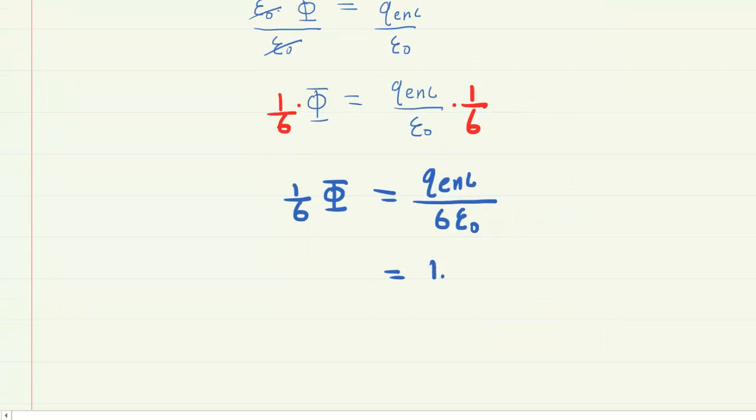And that happens to have a value of 1.6 times 10 to the negative 19th coulombs divided by six times this constant, which has a value of 8.85 times 10 to the minus 12. And then the unit here is coulombs squared per newton meter squared.